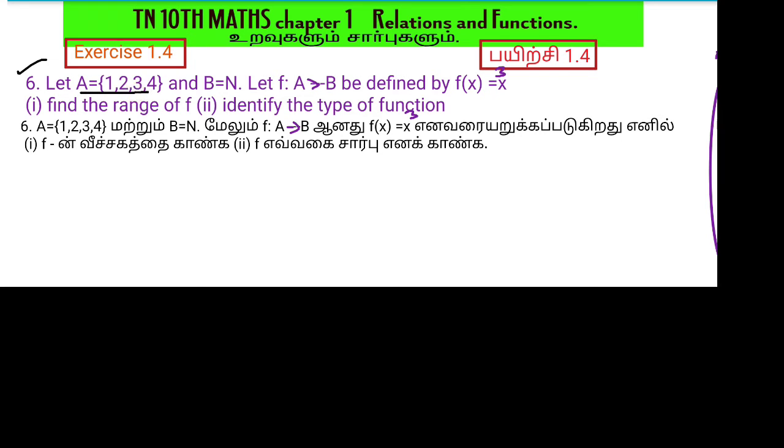A equal to 1, 2, 3, 4 and B is natural number. Let function f: A to B be defined by f of x equal to x cube.